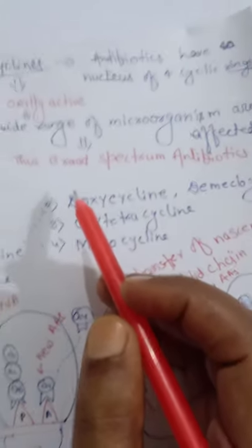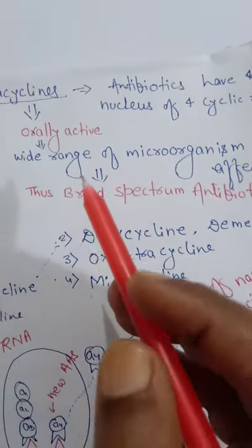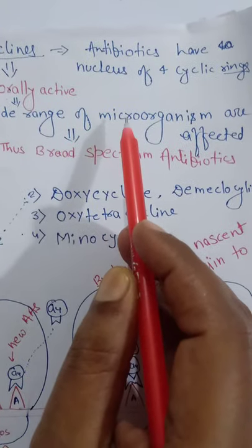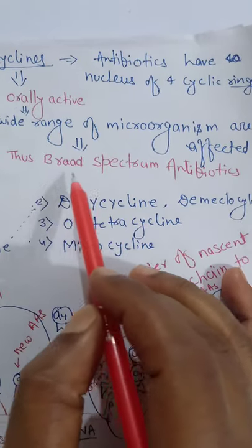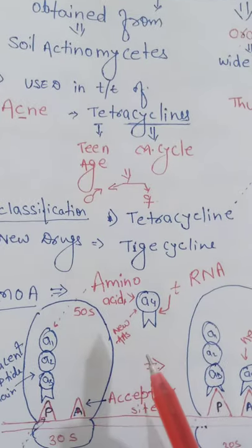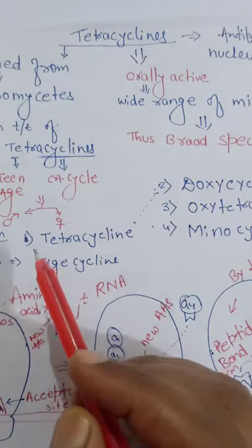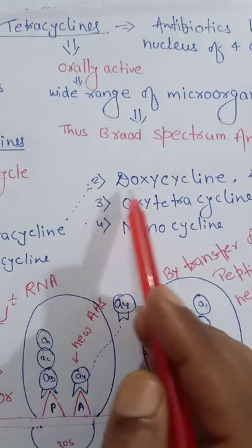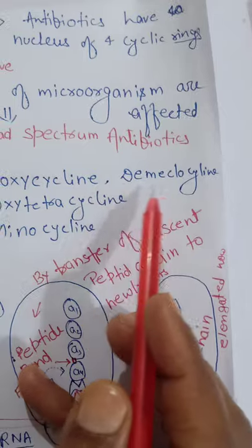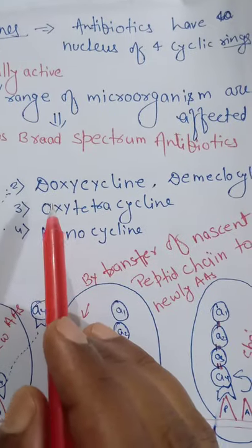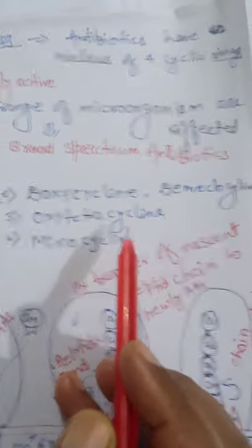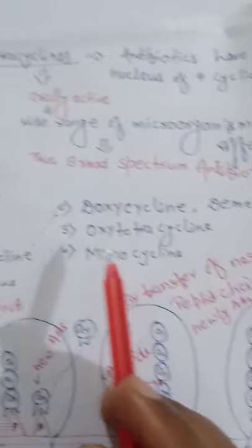Why is tetracycline a broad spectrum antibiotic? Because a wide range of microorganisms are affected. The classification includes: tetracycline, doxycycline, oxytetracycline, minocycline, and demeclocycline.